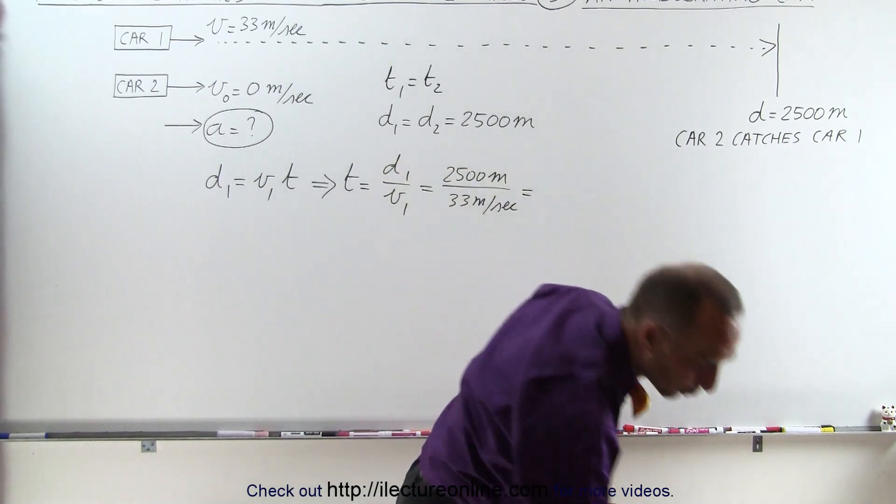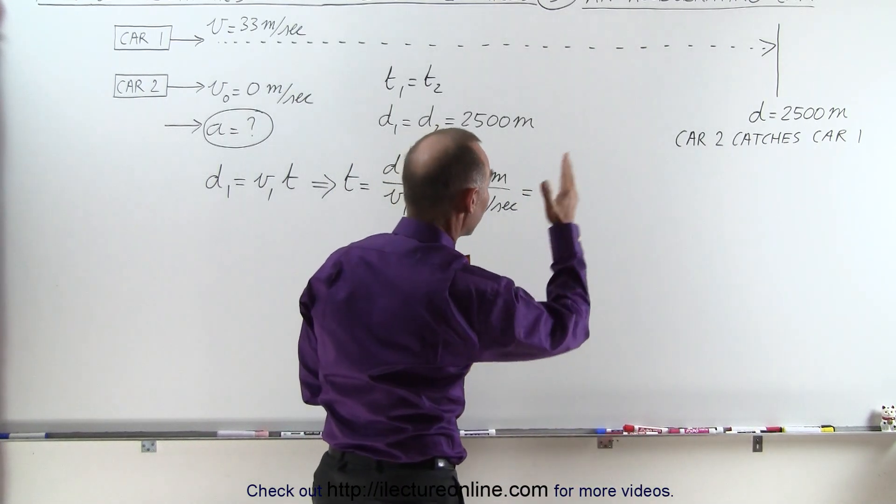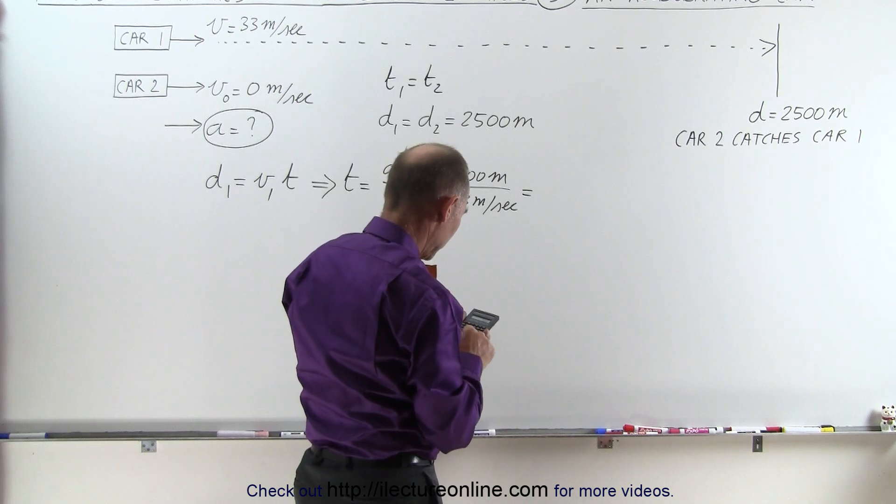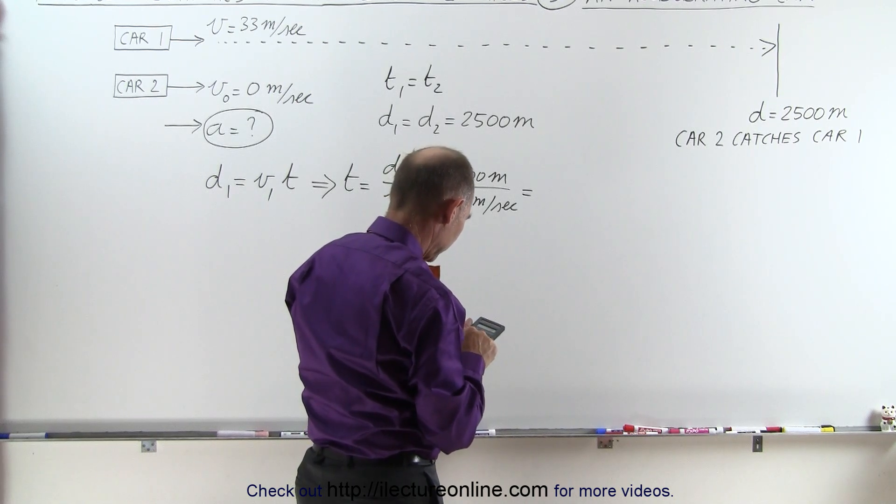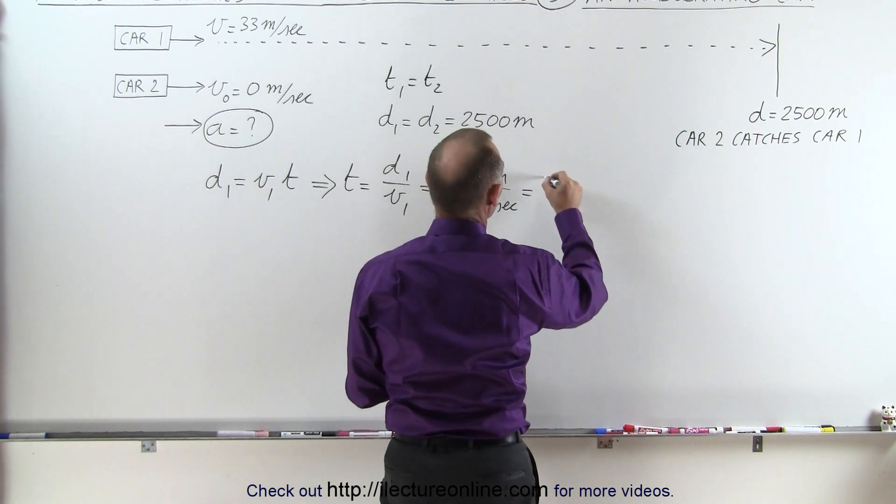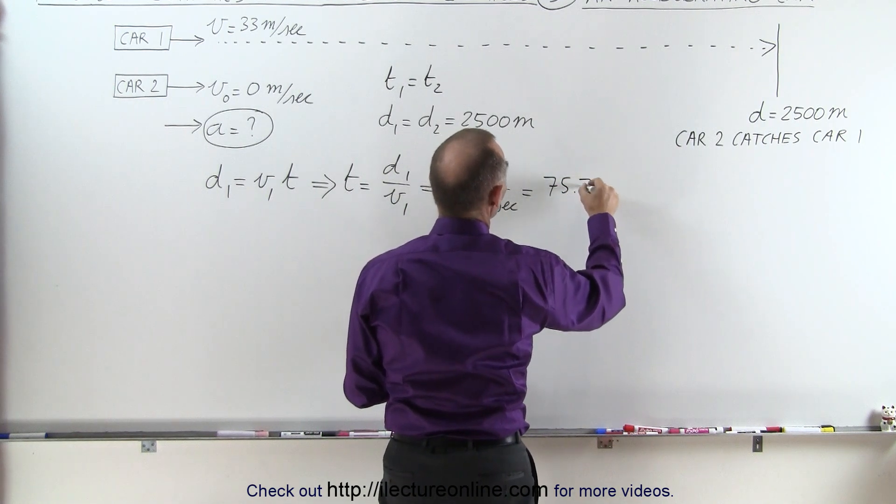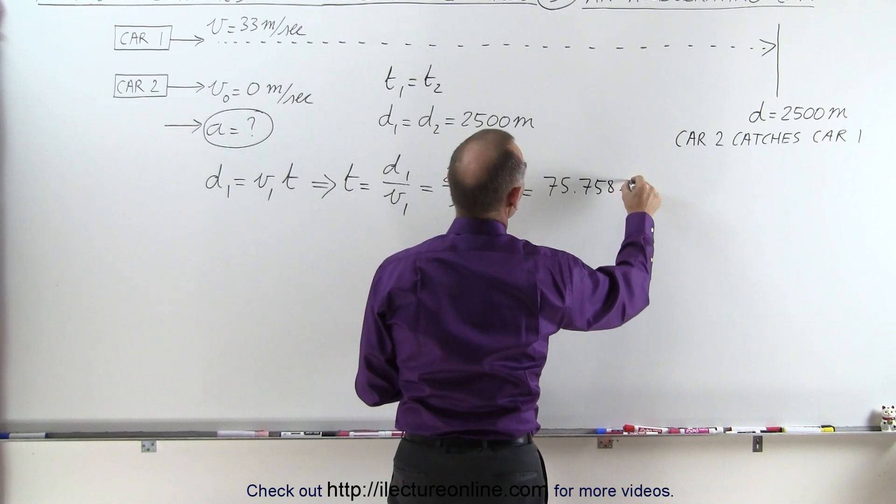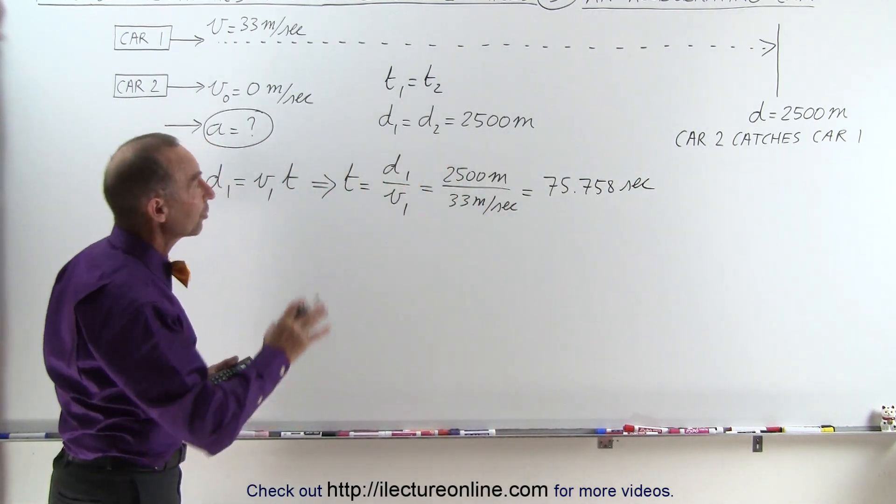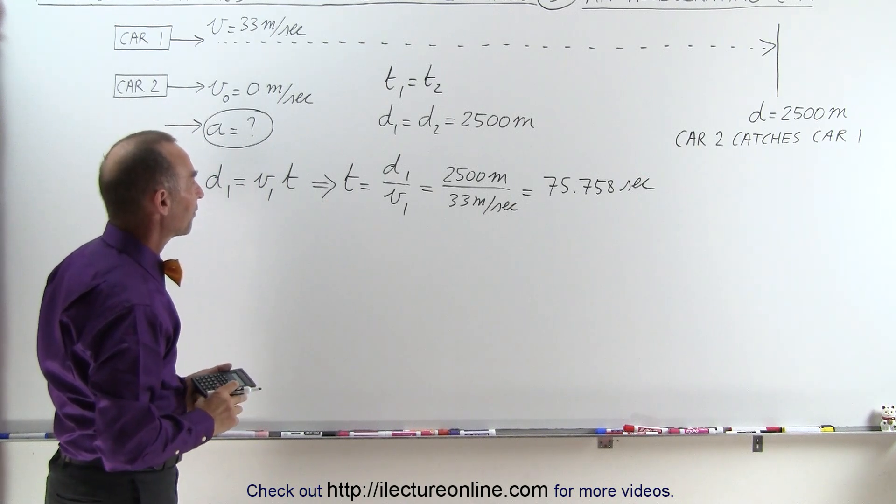So in this case, we're going to know how long it's going to take for car 1 to get there, and also for car 2 because the time will be the same. So 2,500 divided by 33 is 75.758 seconds. So that's the amount of time it takes for both cars to get to a distance of 2,500 meters.